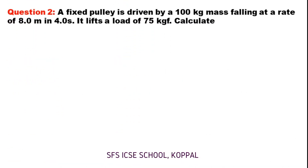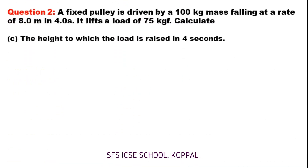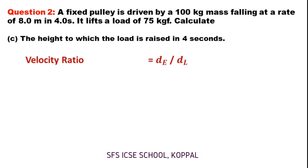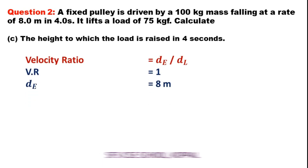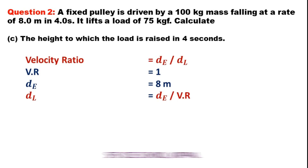Now, Part C — the height to which the load is raised in 4 seconds. Velocity ratio equals distance moved by effort divided by distance moved by load. Velocity ratio is 1, and distance moved by effort is 8 meters. So distance moved by load equals 8 divided by 1, which is 8 meters.